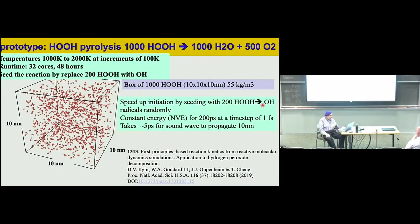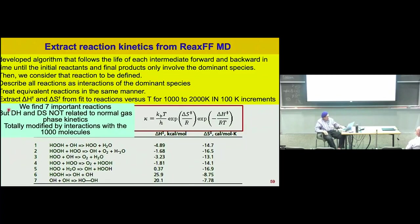We did the reactive dynamics at different temperatures — 1000, 1100, 1200 Kelvin, up to 2000 Kelvin. At every one of these temperatures we ran the reactive dynamics and pulled out each of the reactions that occurred — there were only seven important reactions. We did this as a function of temperature so we can back out the activation barrier and the activation entropy from the temperature dependence.